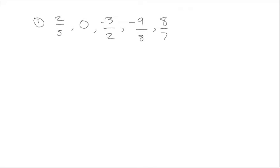We have a series of fractions and the number 0 in a row, and we need to list them in order from least to greatest. We have 2 fifths, 0, negative 3 halves — that's negative 3 over 2 — and negative 9 eighths, or negative 9 over 8, and 8 sevenths, which is a positive fraction. We know we're going to start with the two negatives because they are both negative and the others are positive — negatives are below 0.